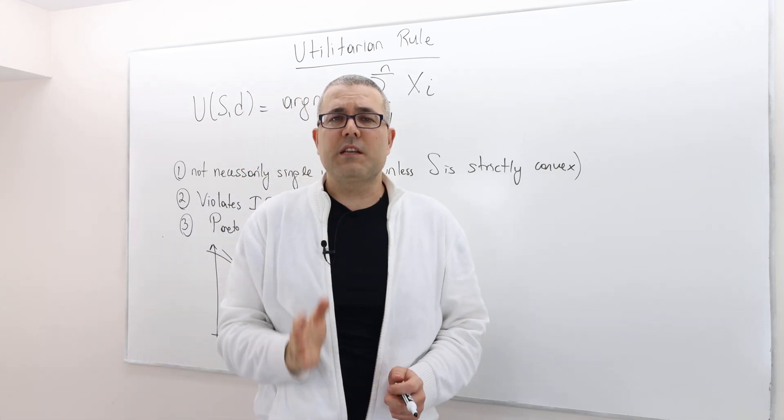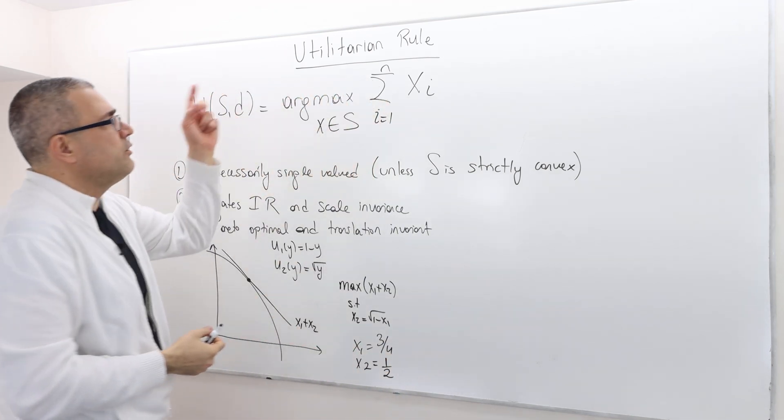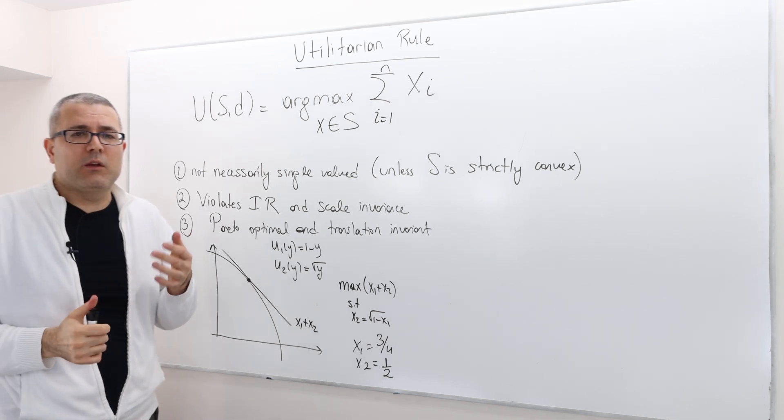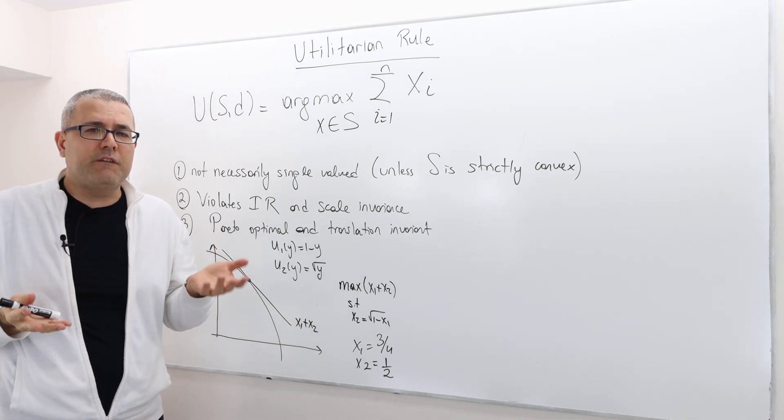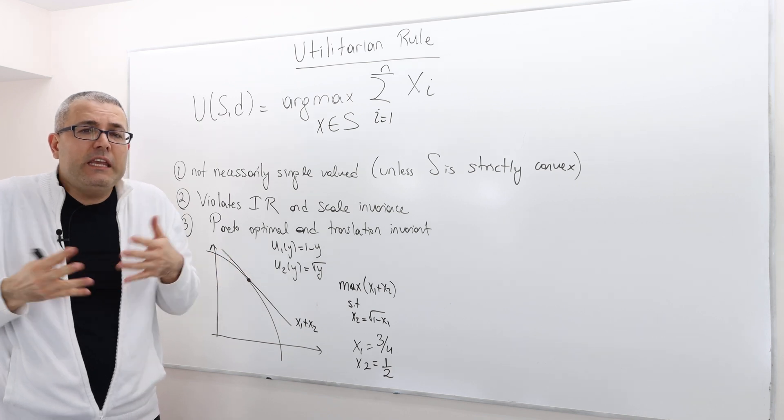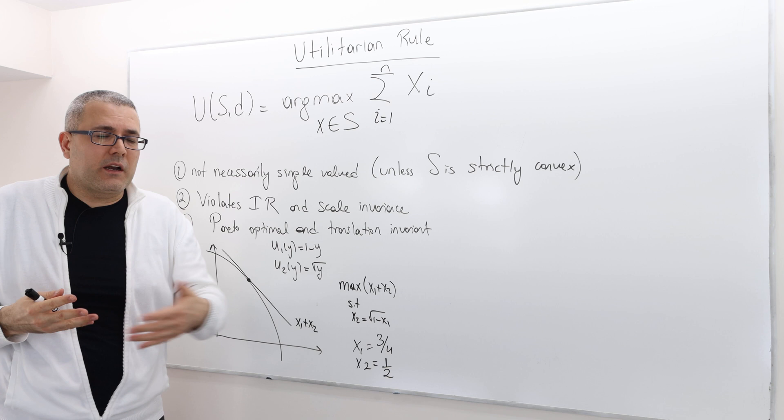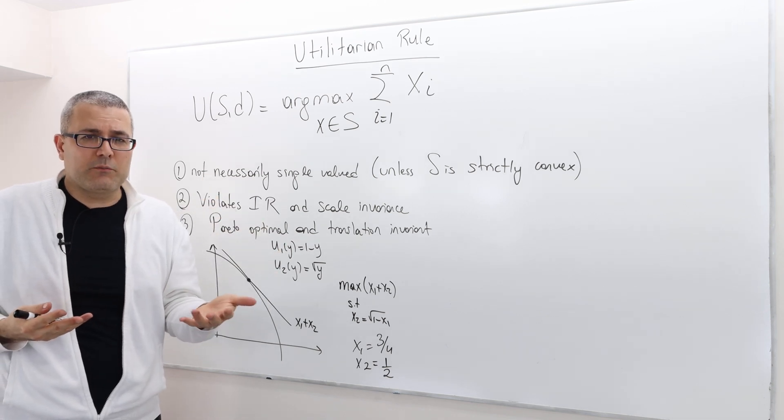Okay guys, so our last bargaining rule is the utilitarian rule. It basically says the following: why do we treat each individual, each negotiator equally? It matters how much they are enthusiastic about this bargaining problem.